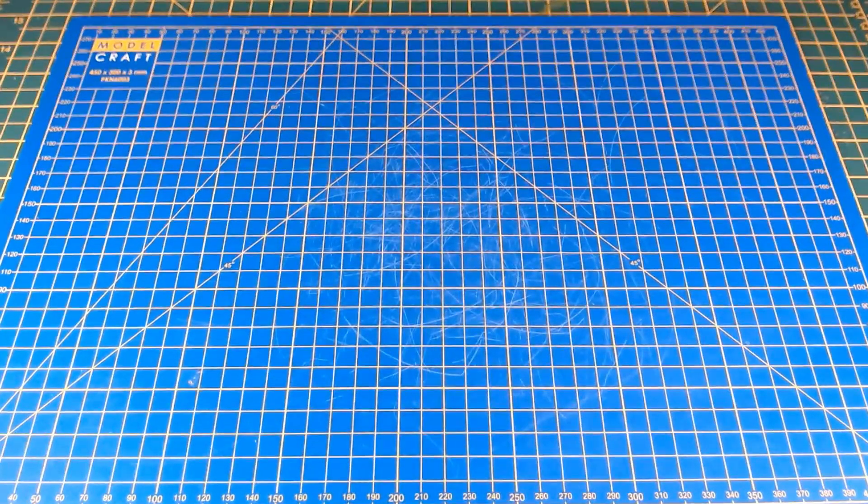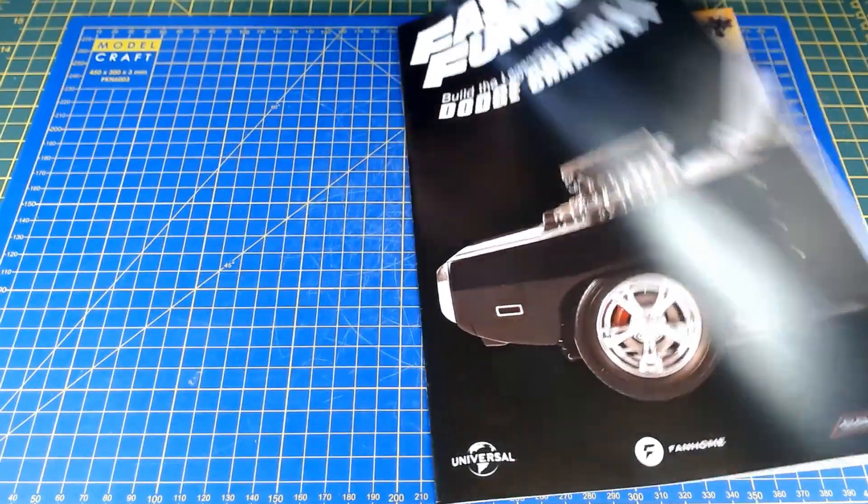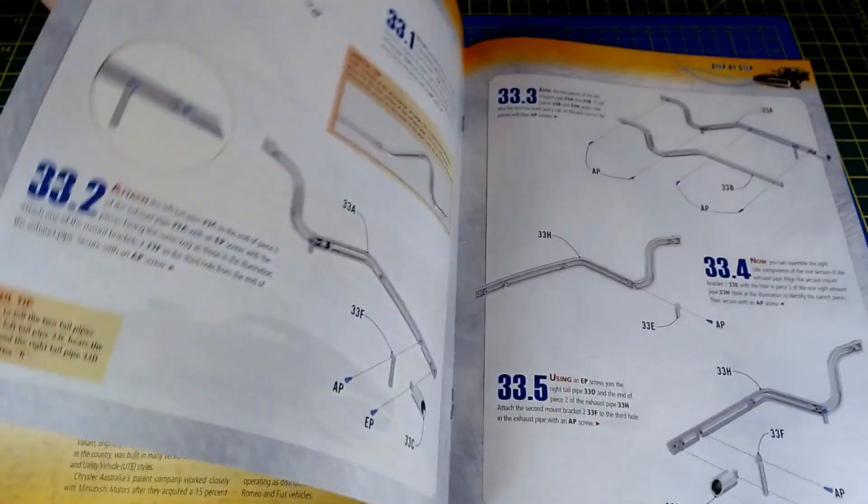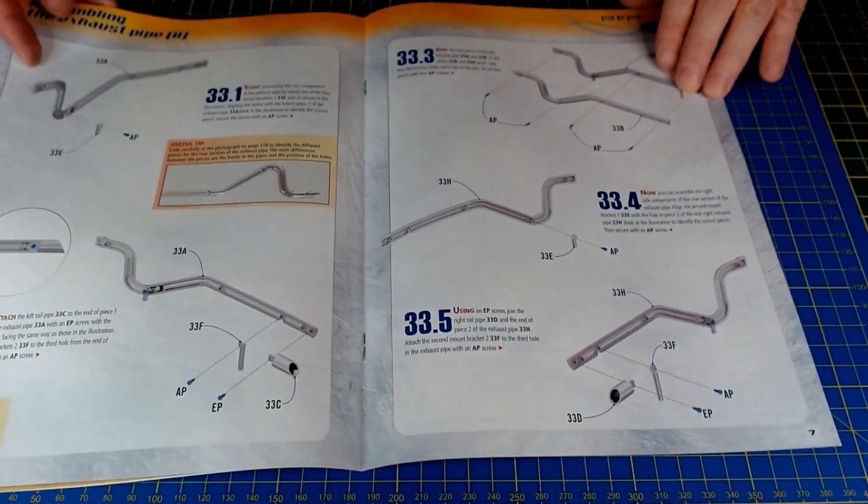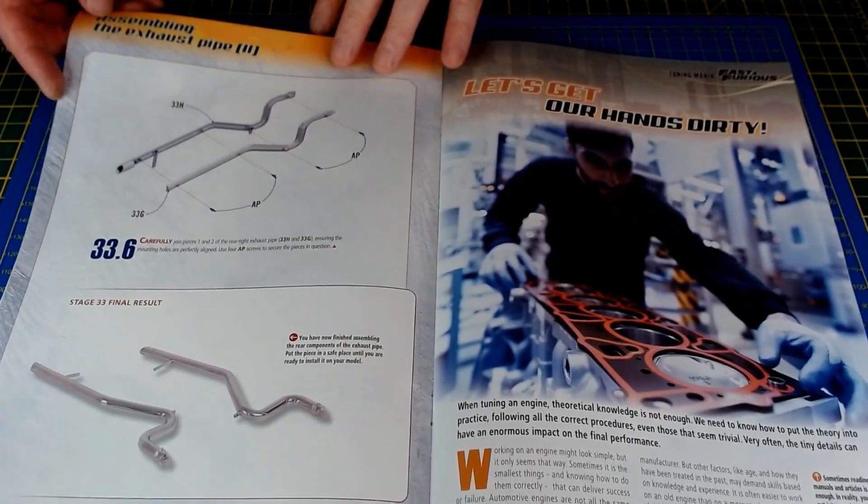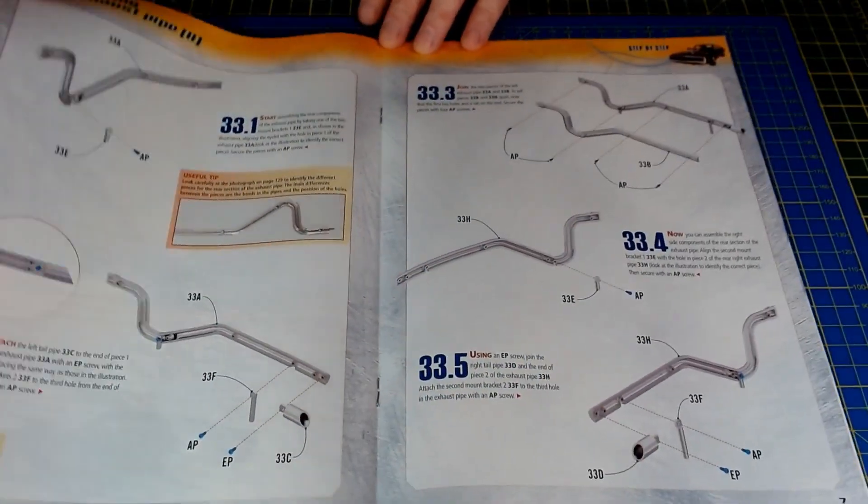Issue 33. What have we got coming up in issue 33? Assembling the exhaust pipe, part two. So we've got some more parts for the exhaust. I don't think we're fitting it to the car at this point. We're just carrying on the construction of some of these exhaust pipes. So that will be issue 33, and that will be coming up soon.